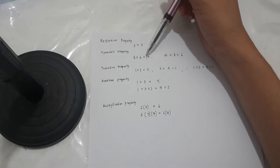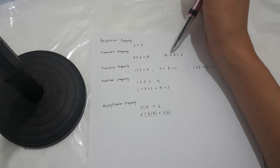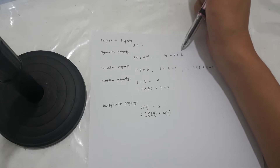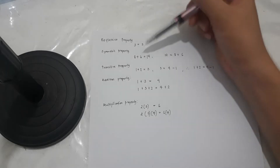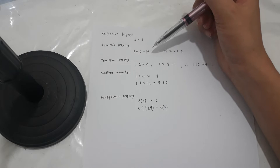Next is the symmetric property. 8 plus 6 is equal to 14, so therefore 14 is also equal to 8 plus 6. You're just going to interchange them.